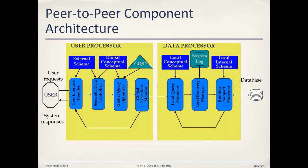Once the syntactical check is done, it moves toward the semantic data controller. The task of the semantic data controller is to evaluate the query in terms of the global conceptual schema, normally called GCS, which we discussed in the previous class. The GCS gives you the overall schema of the whole application. Since we are talking about a distributed or fragmented database environment, the GCS has the complete definition of that particular database. The semantic data controller checks the schema and then passes it on to the global query optimizer.